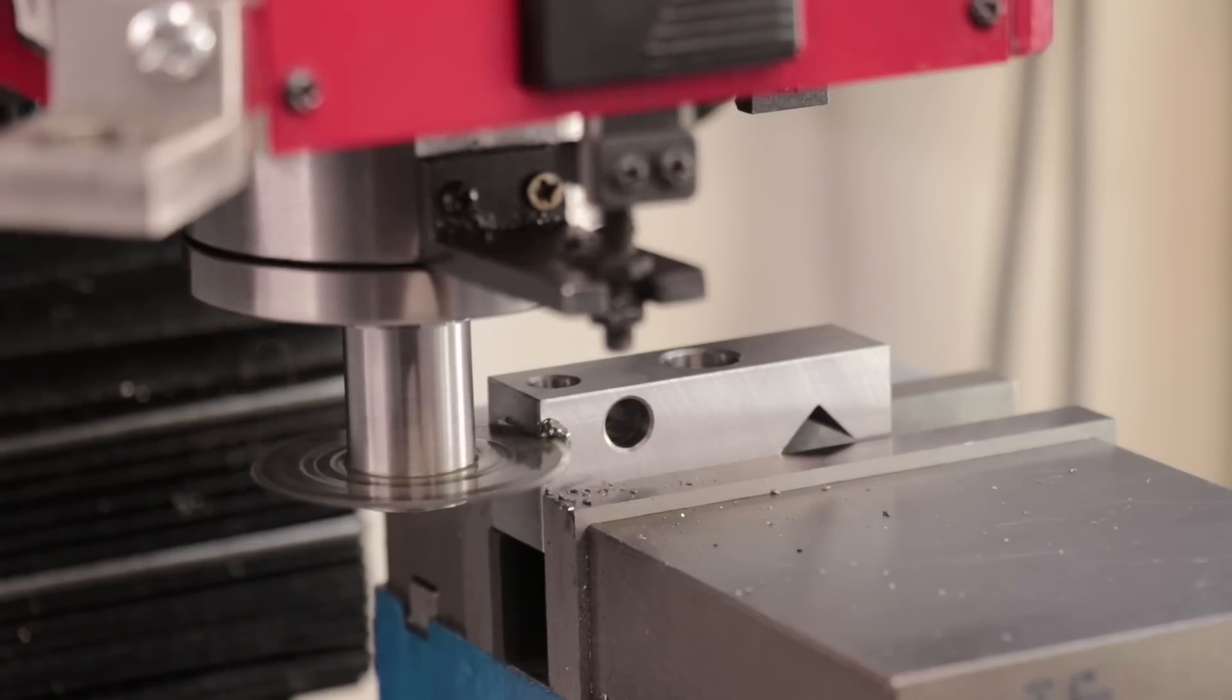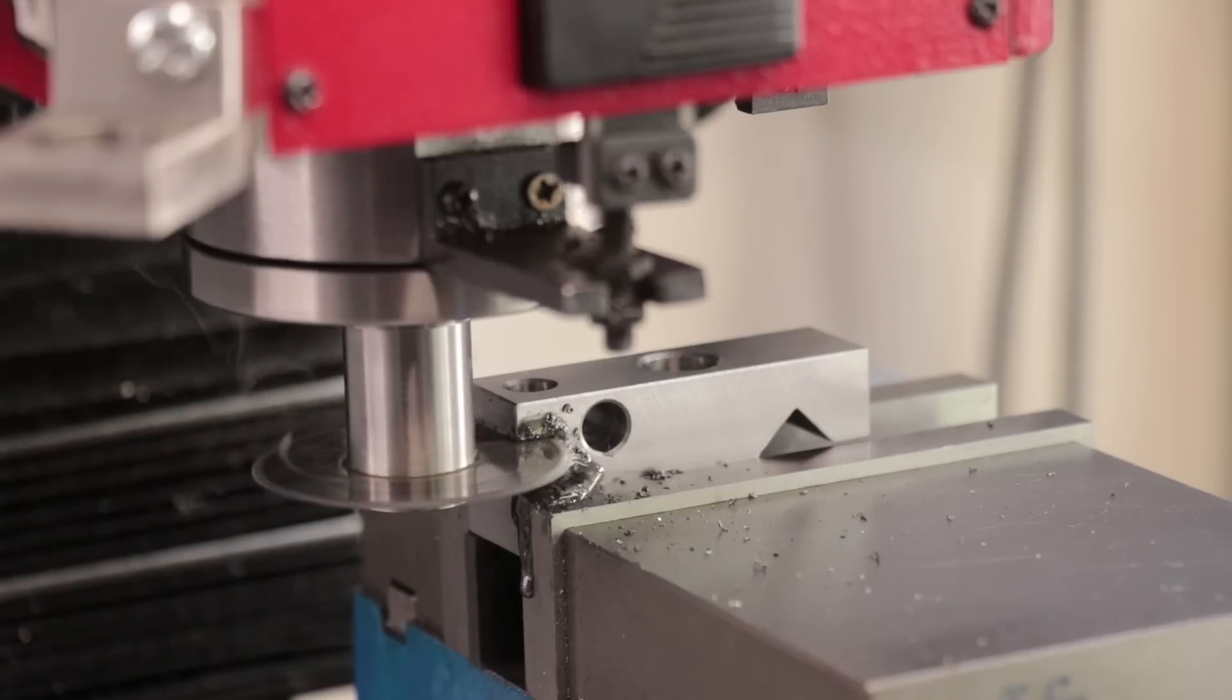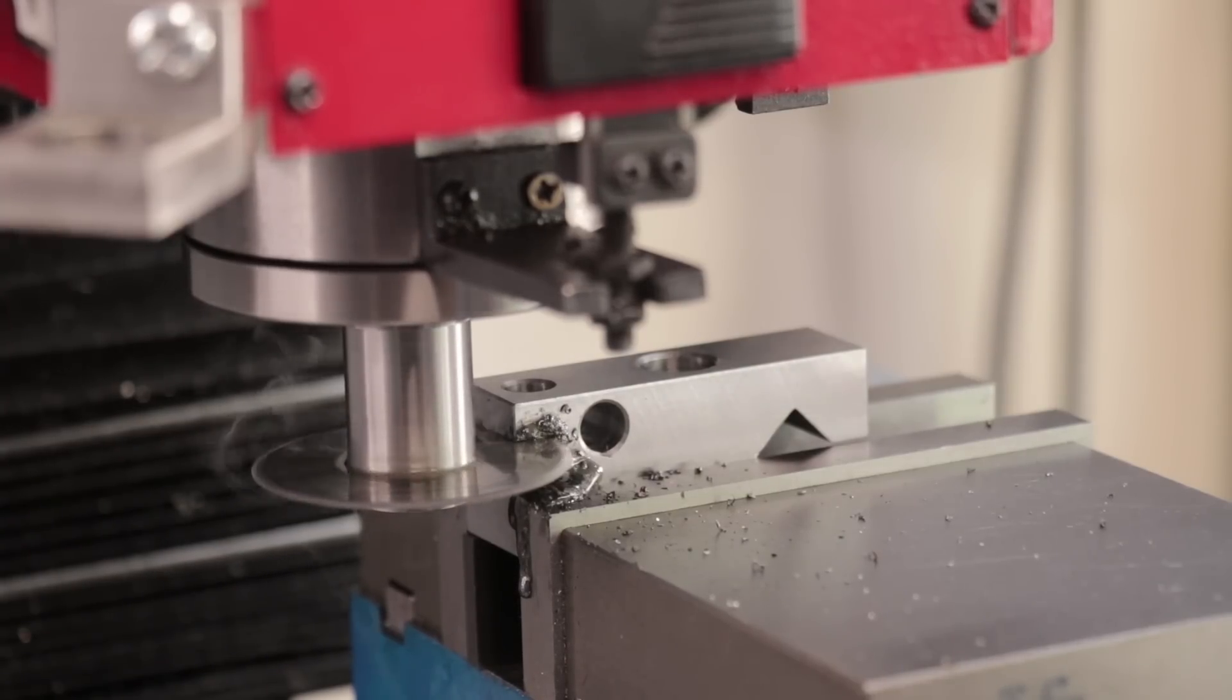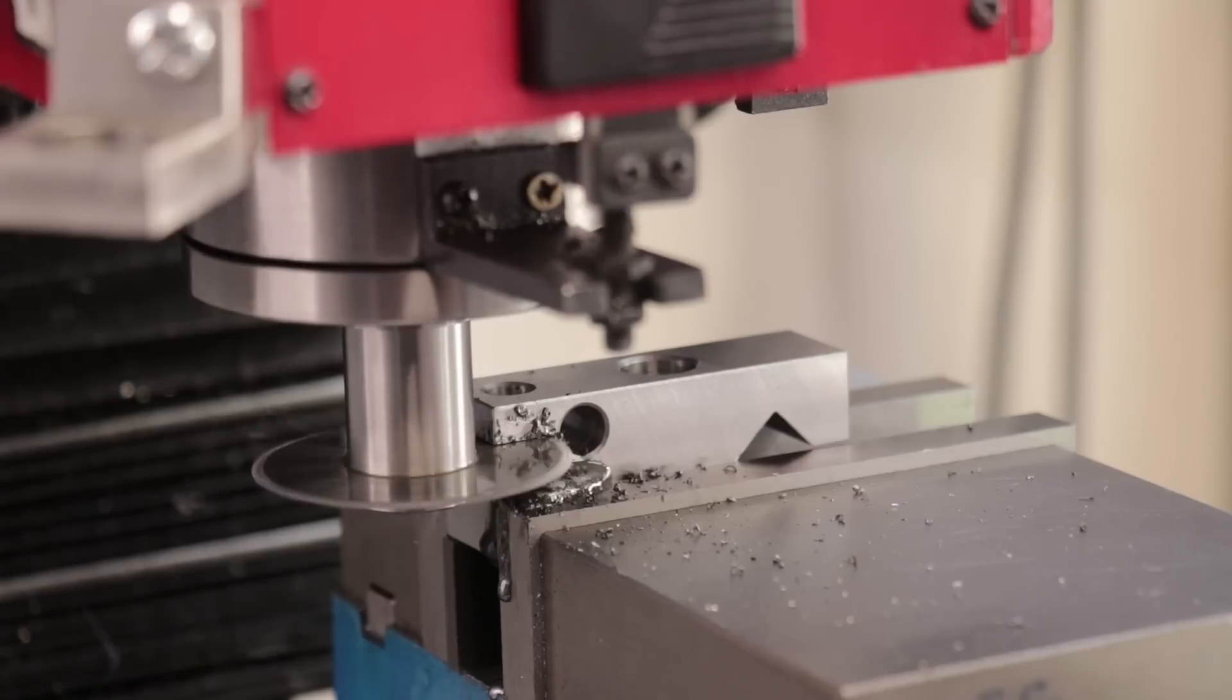And finally I'll use a slitting saw to cut a small slot to open up that hole and allow me to clamp down tightly on the indicator.